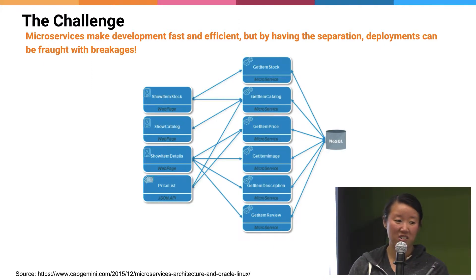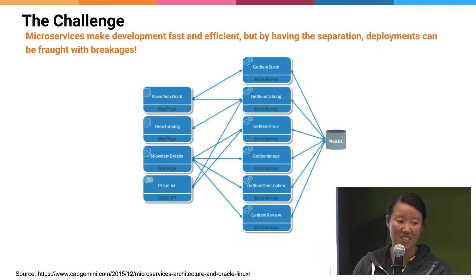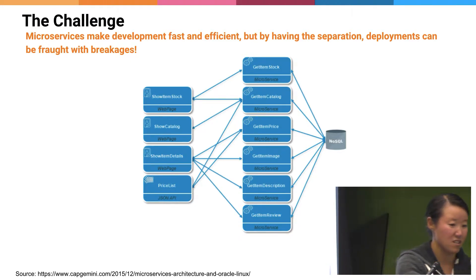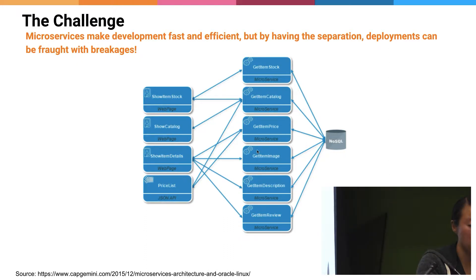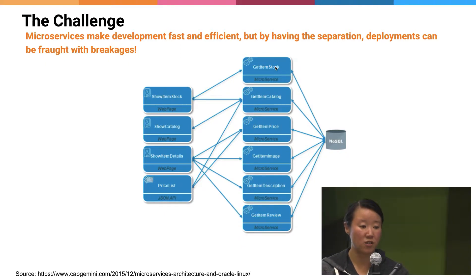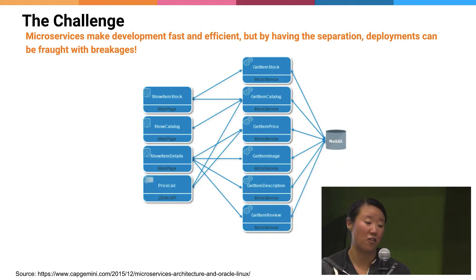The challenge: microservices make development fast and efficient, but by having that separation, deployments can be fraught with breakages. I took this microservice diagram from online. Essentially, you have a bunch of front-end services and a bunch of back-end services with a lot of interactions between them. You can have different development teams working in isolation on each of the services, each doing a bunch of things at the same time.